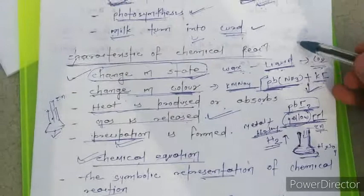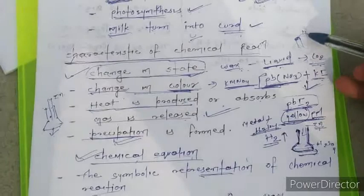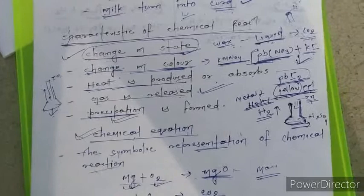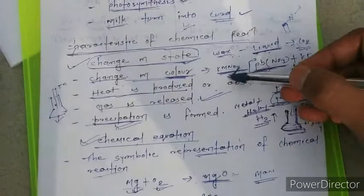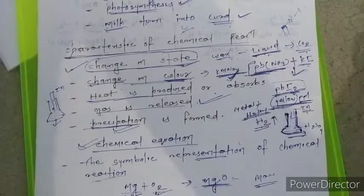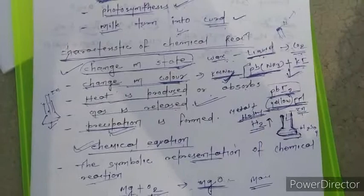If you observe a candle at the top, it first converts into the liquid state and then converts into carbon dioxide. Another characteristic is change in color. For example, if we add potassium permanganate to water, the color changes. So in some chemical reactions, color changes occur.